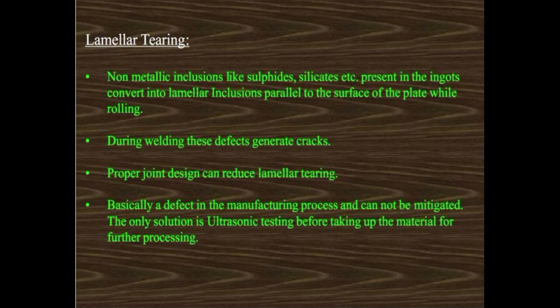Lamellar tearing: non-metallic inclusions like sulfates and silicates present in ingots are converted into lamellar inclusions parallel to the surface of the plate during rolling. This is a steel production defect. During welding, these defects generate cracks. Proper joint design can reduce lamellar tearing. The only solution to mitigate it is ultrasonic testing before taking the metal for further processing — before welding any plate, we must check for lamellar tearing defects by UT.